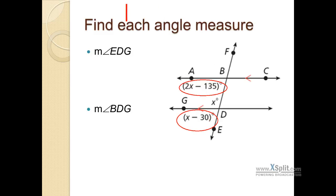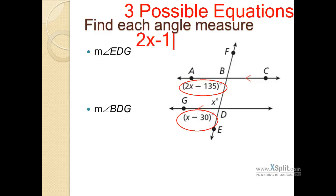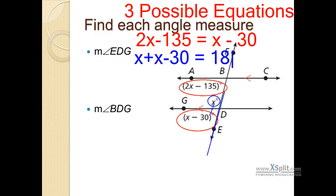That's in fact one equation of three possible equations we could write. One equation, we could say 2x minus 135 is equal to x minus 30. That's one possible equation we could write. This other angle is not equal to the other two, but in fact it adds up to 180 with the other two. This is a straight line, obviously. These two angles are going to be supplementary. They're going to add up to 180. So I could say x plus the x minus 30 equals 180. That's another equation I could write.